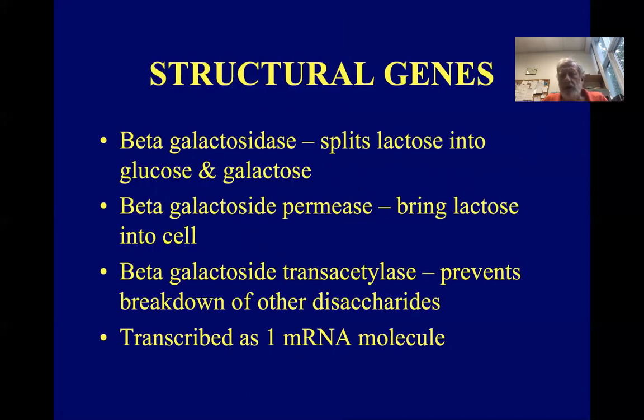So the three structural genes then, beta-galactosidase is the enzyme that splits lactose into glucose and galactose, its two monomers. Beta-galactoside permease is a membrane protein that brings lactose into the cell.